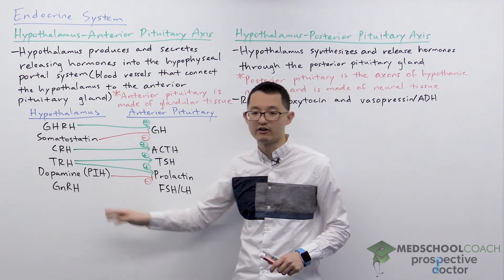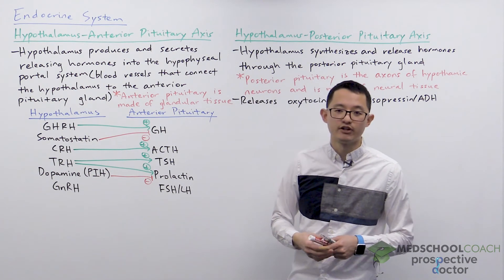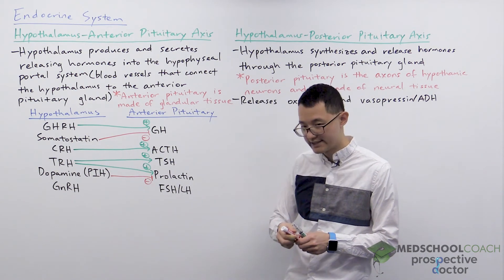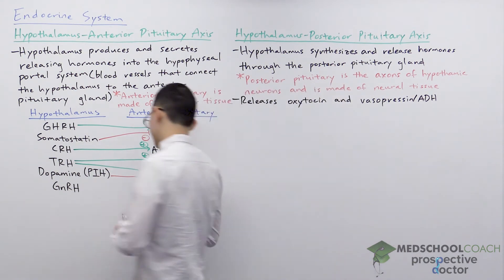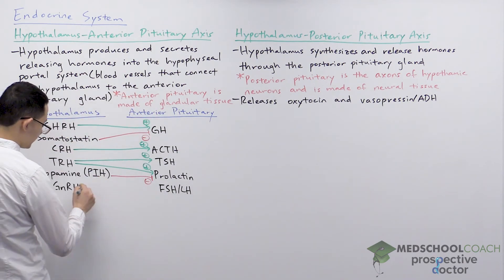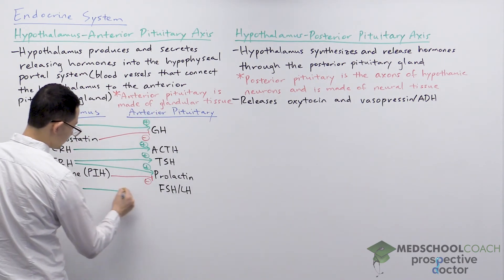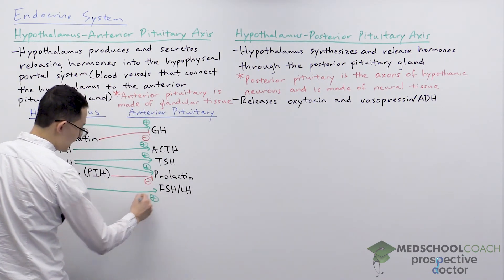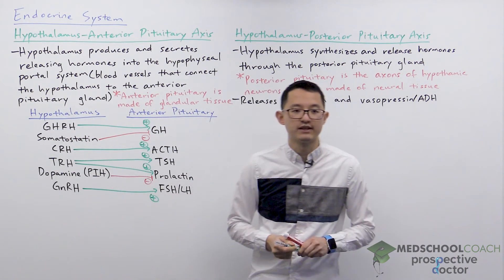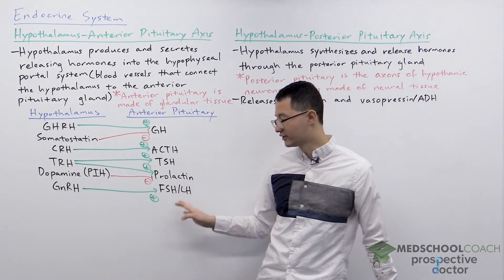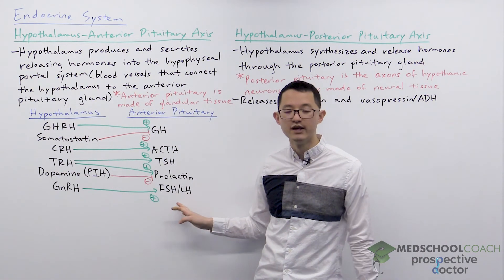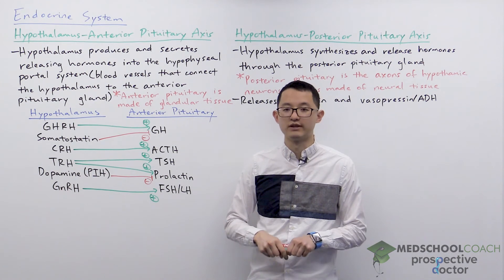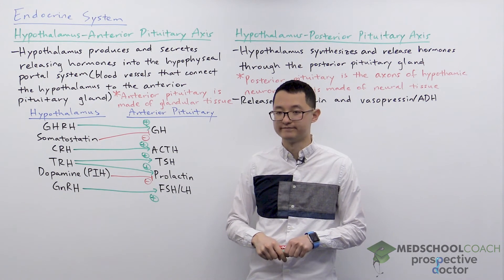Finally, we have GnRH — gonadotropin releasing hormone. This hormone will stimulate the anterior pituitary to release both FSH (follicle stimulating hormone) and LH (luteinizing hormone), which both have important roles in controlling reproduction.